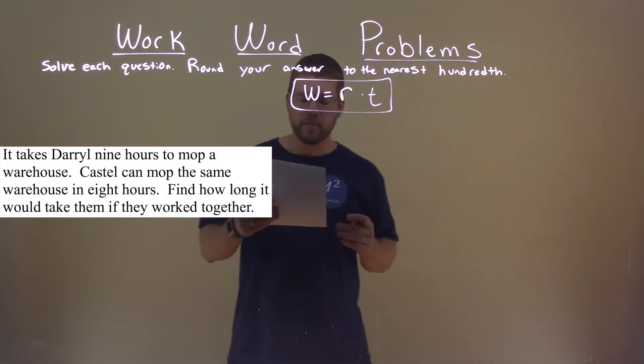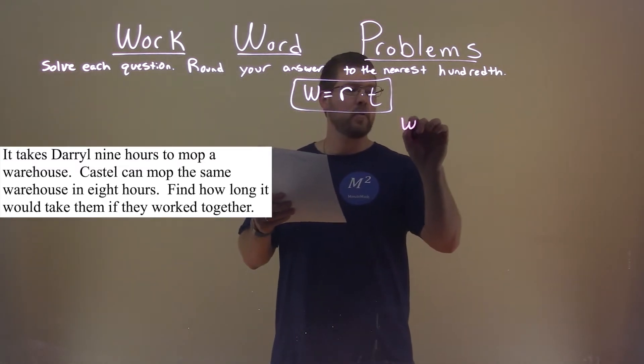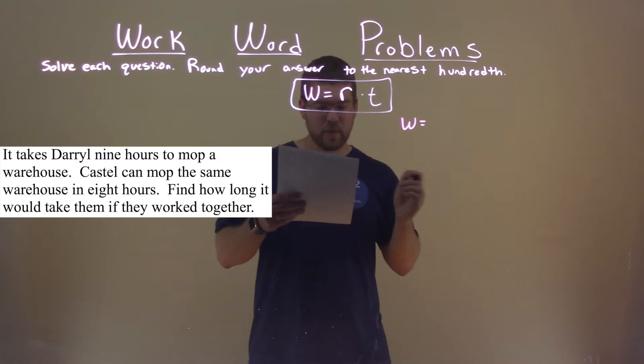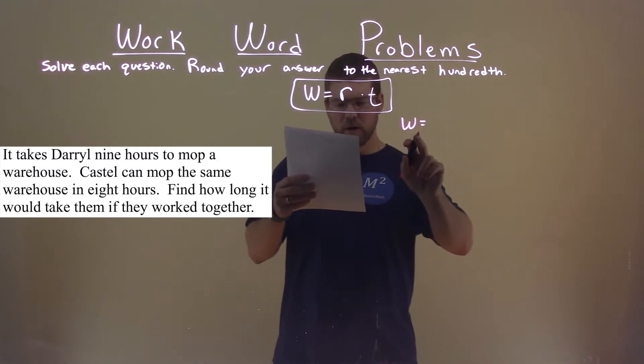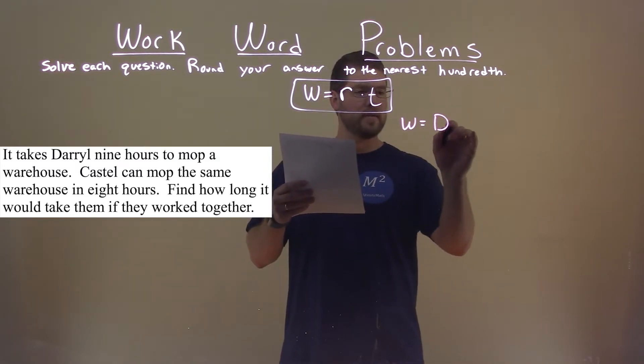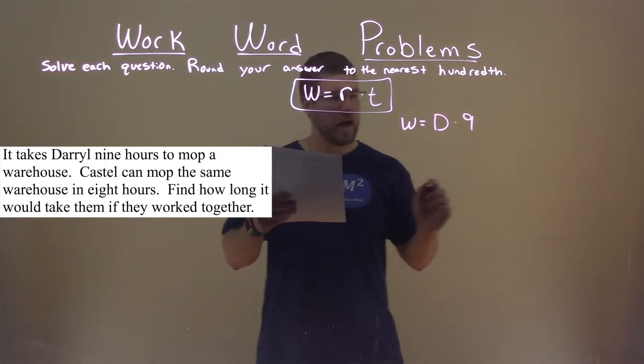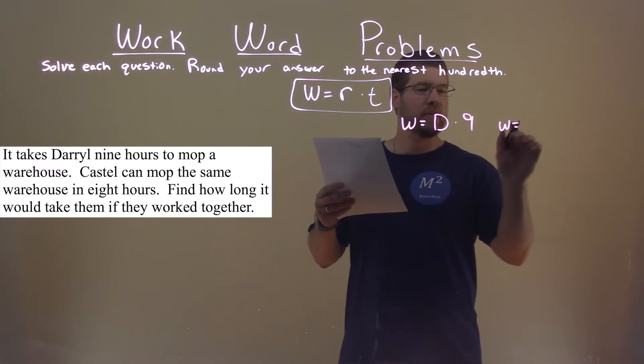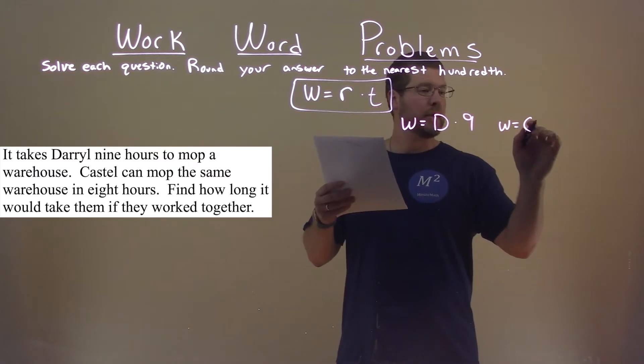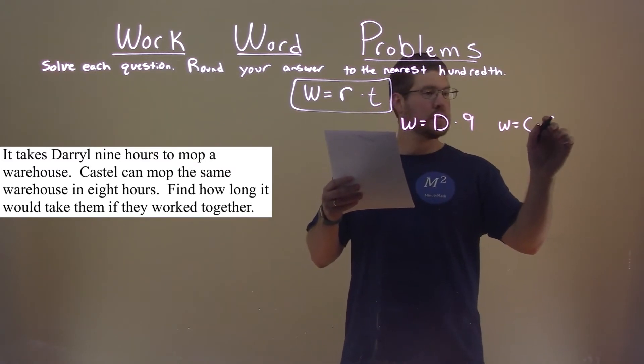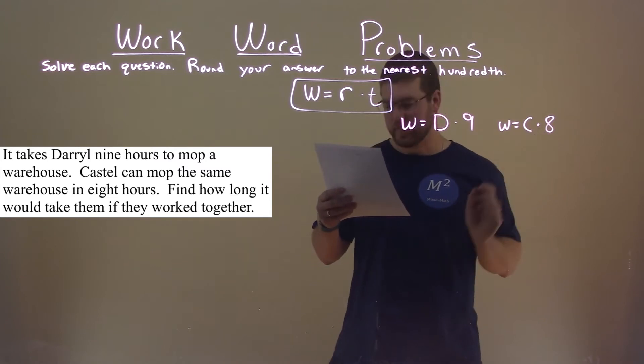So, let's write down what we know. Daryl, for mopping the warehouse, that work takes Daryl's rate, D, times nine hours. Castle can mop that same warehouse, same work being done, equal to Castle's rate times Castle's time, which is eight hours.